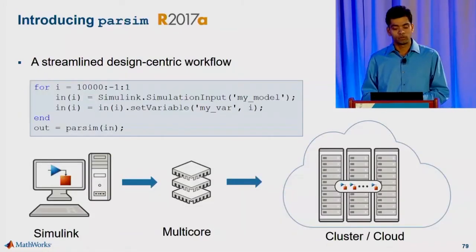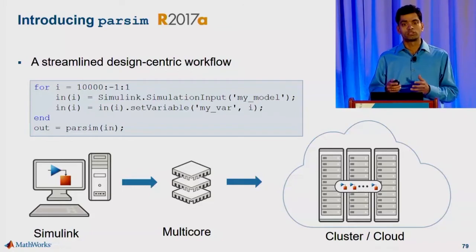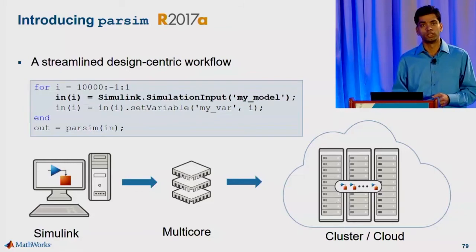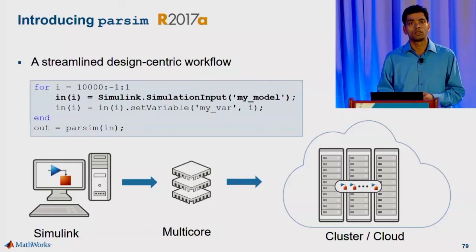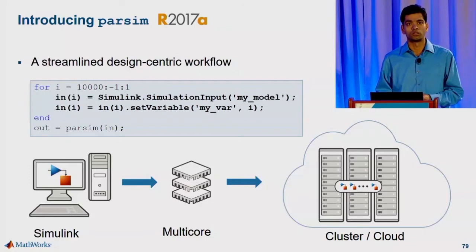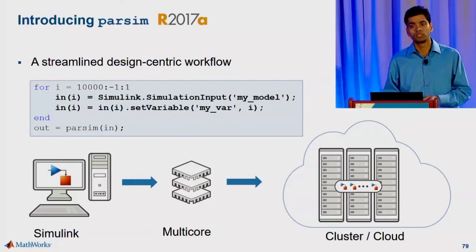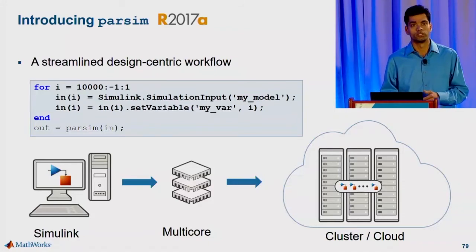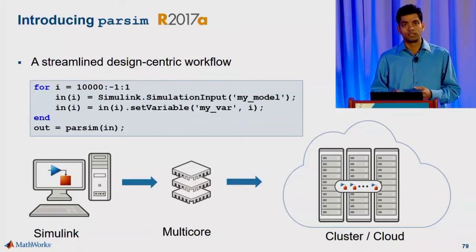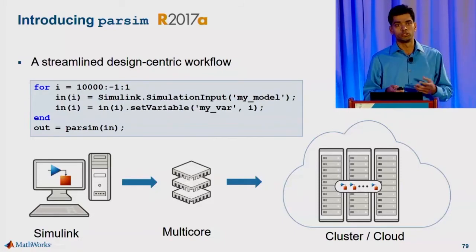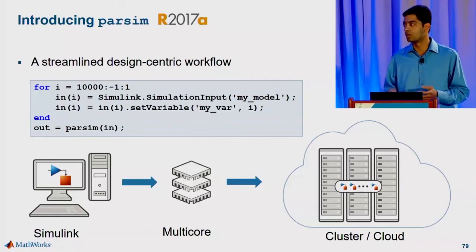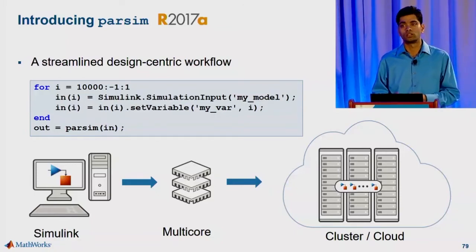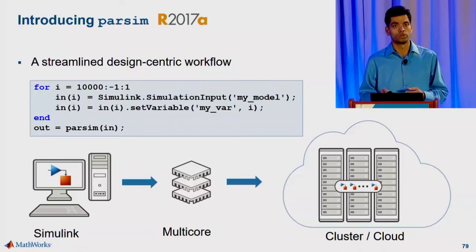In 17A, we are introducing the parsim command. It gives you a streamlined design-centric workflow. You start off by creating a simulation input object for a model. Any changes you would like to make to the model go on the simulation input object, and you create an array of these objects that defines the set of simulations you would like to run, and you pass them to the parsim command. The code is the same whether you're using multiple cores of your desktop, multiple compute nodes of your cluster, or cloud. parsim handles all the complexity of setting up the parallel workers for you.